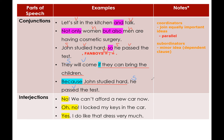Last but not least, we have interjections. We haven't dedicated a full lesson to interjections because they work independently and don't affect sentence structure — and they're not important for the SAT. Examples: 'No, we can't afford a new car now,' 'Oh no, I locked my keys in the car,' or 'Yes, I do like that dress very much.' You can cross out the interjection and still have a complete sentence.